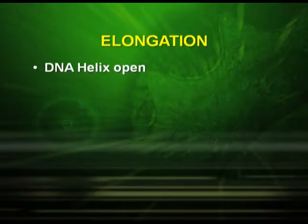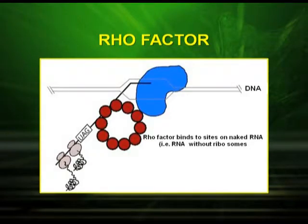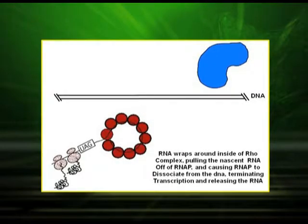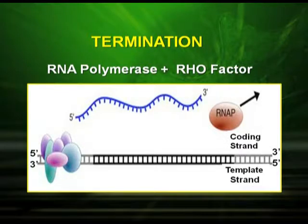After initiation, the elongation process starts. The DNA helix opens, nucleotides are added, and the RNA polymerase moves on from the promoter region, forming ribonucleotides. Termination involves the Rho factor, which is the terminator factor that helps terminate the RNA nucleotide chain. The Rho factor dissociates and the nascent RNA moves out of the DNA. The RNA polymerase then leaves the DNA and the RNA molecule is released, completing the termination process.